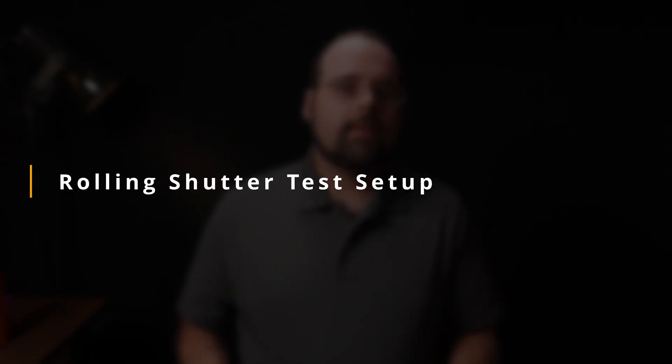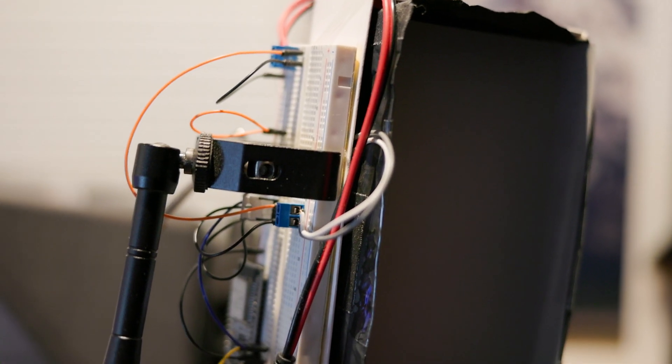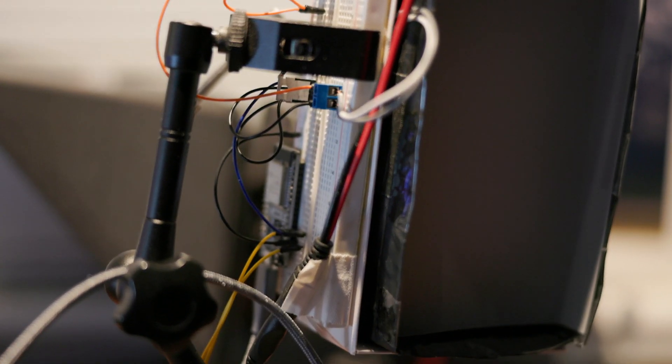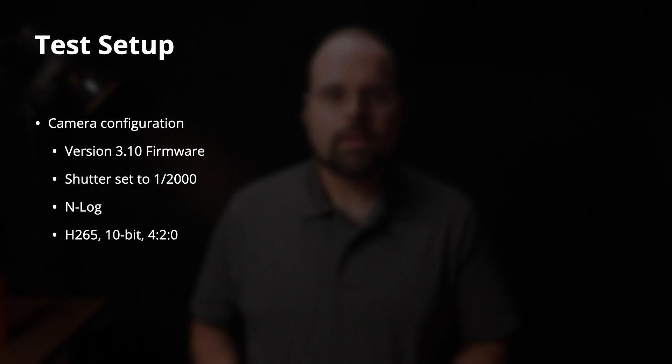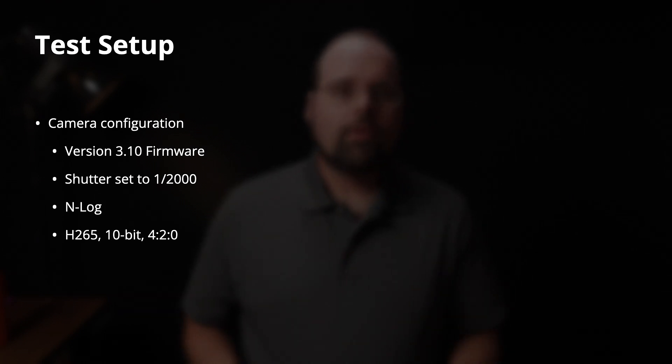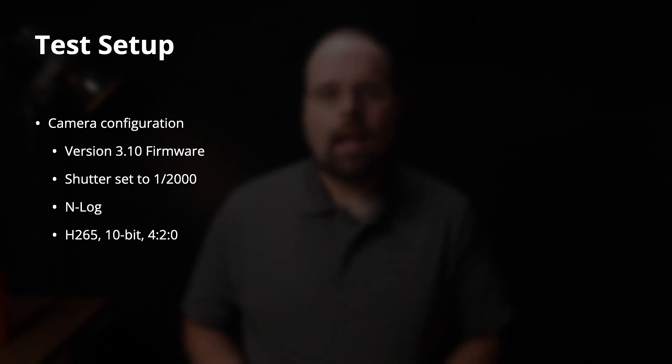The test setup is the same I used for the R5 and R5C testing and will continue to use going forward — I have another video on the math behind the methodology, linked in the description. Briefly: I use a very controlled pulse of light with a known timing, combined with a known shutter speed, and the output video has bands of bright exposure where the camera and light have conspired to expose part of the frame. From those three pieces of information I calculate the rolling shutter time for the entire frame. The camera was a Nikon Z9 running firmware version 3.10, shutter speed set to 1/2000s, shooting Nikon N-Log in H.265 10-bit 4:2:0.